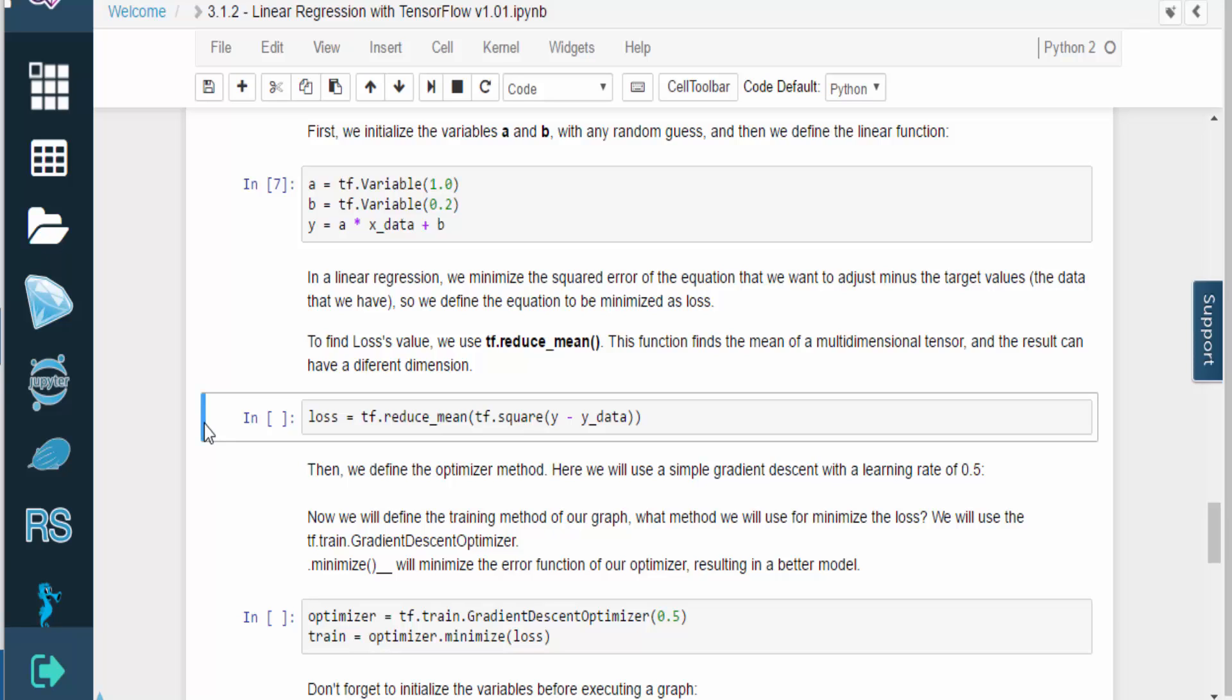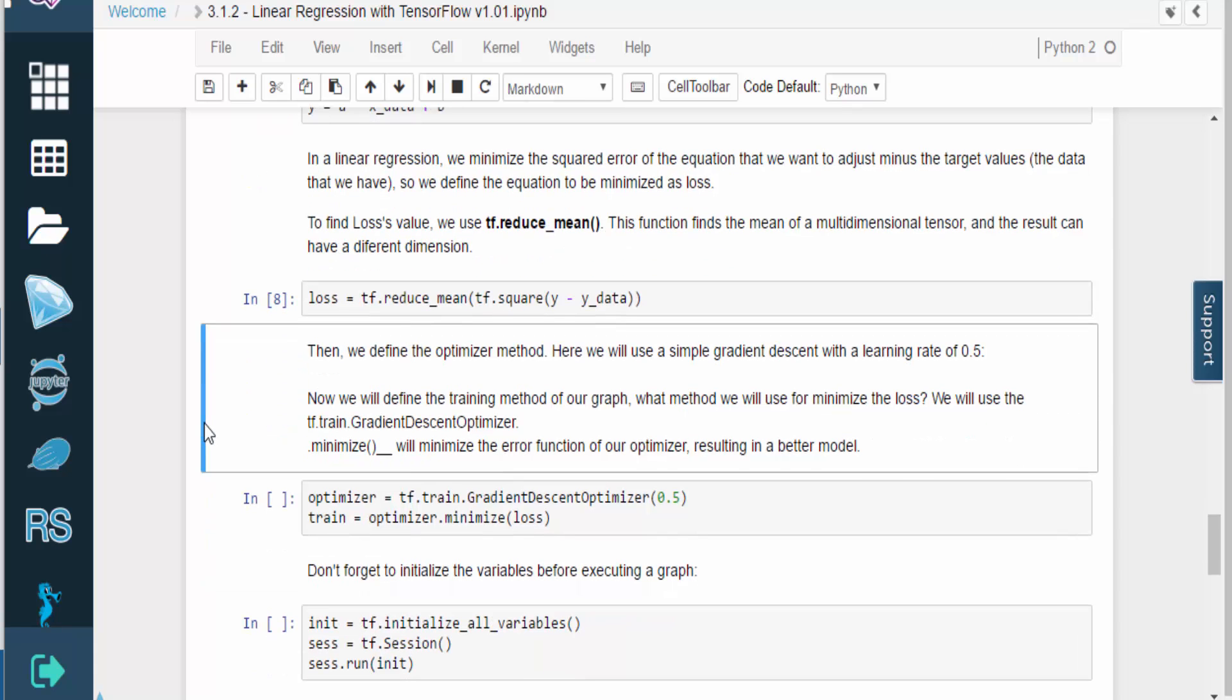To compute the loss, we can use the function tf.reduce_mean(). This function calculates the mean of a multi-dimensional tensor, and the result can have a different number of dimensions than the input.